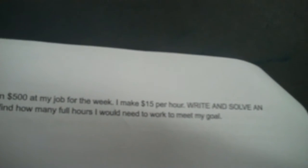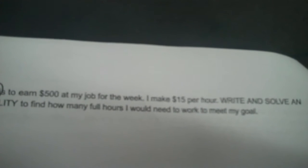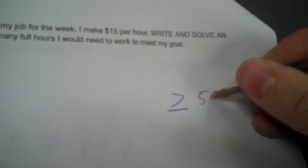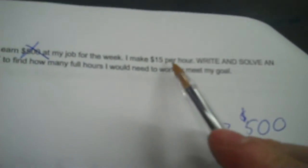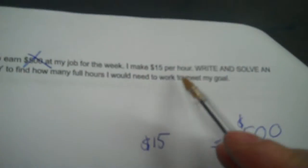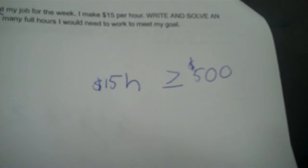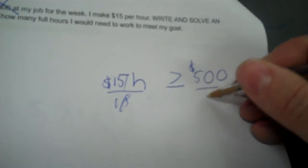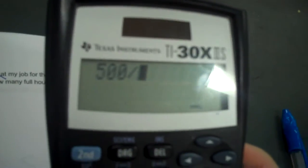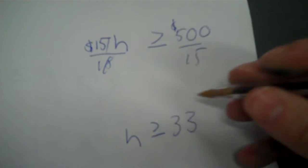When they have days of the week and how many I did, I don't have to multiply by anything. My goal is to earn $500 at my job for the week. I make $15 per hour. Write and solve an inequality to find how many full hours I need to work to meet my goal. The goal is greater than or equal to $500. I'm going to earn $15 more than once — times the number of hours, which I don't have, so I put an H. Then divide: 500 divided by 15. They're asking for full hours, so 33 — round up to 34.